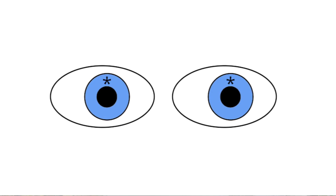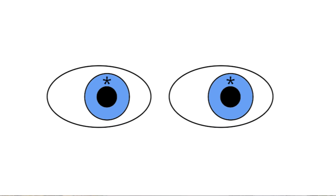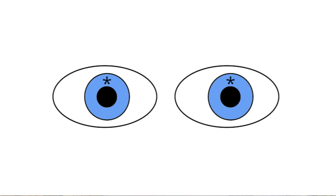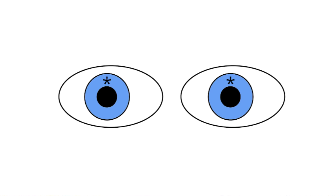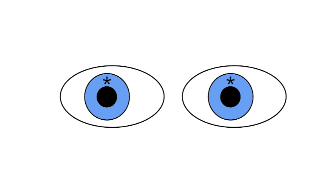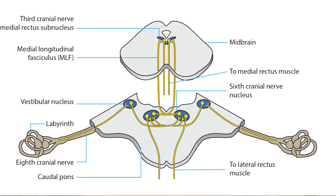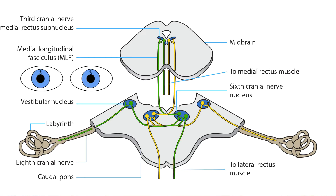The vestibulo-ocular system has the critical goal of keeping the eyes glued to the target when the head or body moves or tilts. To meet that goal, a signal must travel from the semicircular canals or otoliths through the vestibular nerve to the brainstem vestibular nuclei. From there, the signal goes to the oculomotor nuclei, ocular motor nerves, and extraocular muscles. This pathway mediates the vestibulo-ocular reflex.